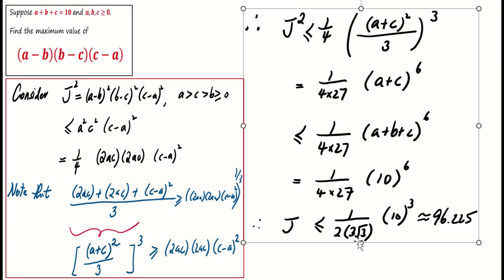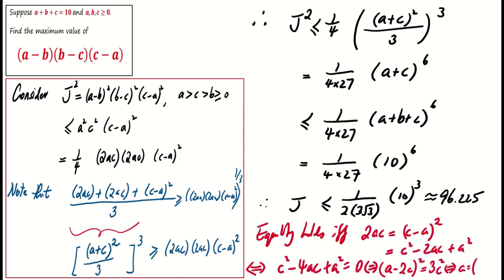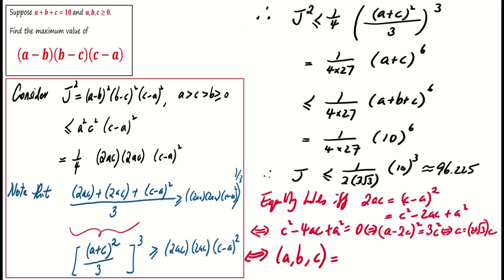Checking for equality, we find that it holds if and only if 2ac equals (c minus a) squared, leading us to approximate values for a, b, c as 7.32, 0, 2.679.